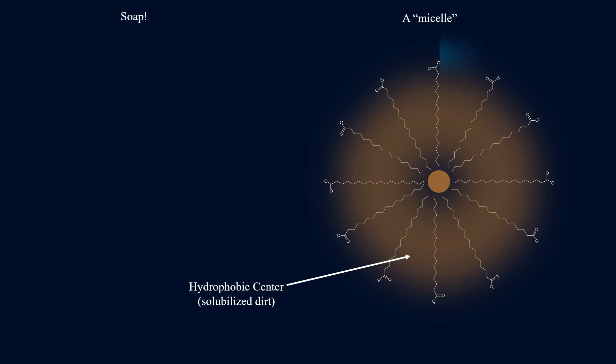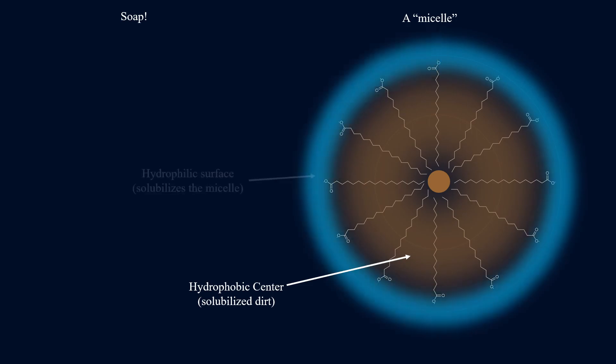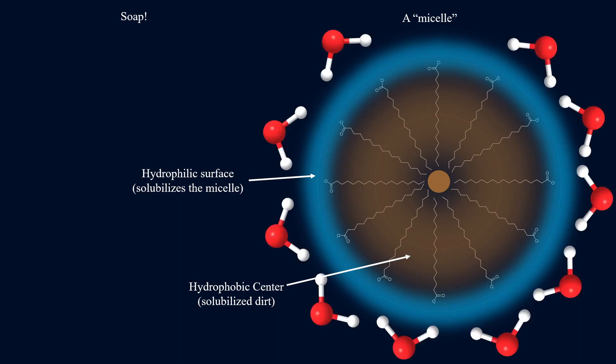However, at the surface of the micelle are the carboxylate groups, which are, again, they're charged. They're good hydrogen bonders. They interact very well with water. So what this allows is for the entire micelle to interact quite well with water, making it very easy to wash away.